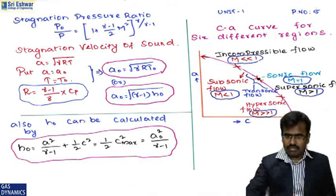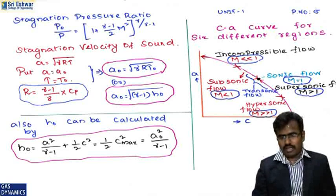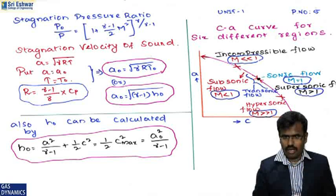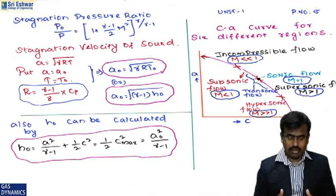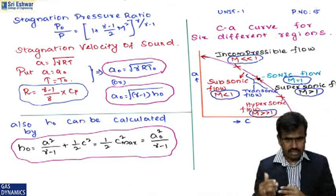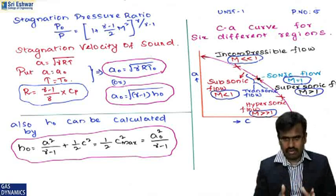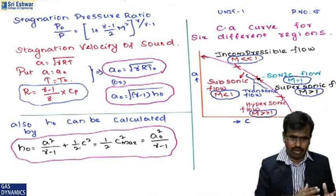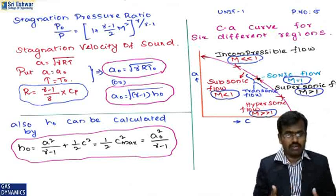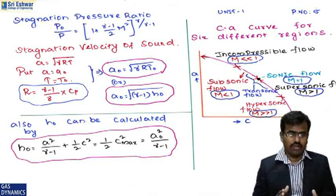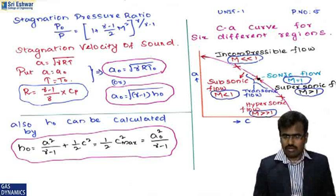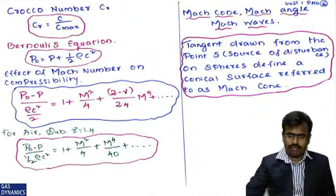For incompressible flow, Mach number is much less than 1. For supersonic flow, Mach number is greater than 1. For sonic flow, Mach number equals 1. For subsonic flow, Mach number is less than 1. For hypersonic flow, Mach number is much greater than 1. This is illustrated in the C/A curve.